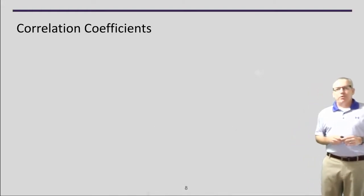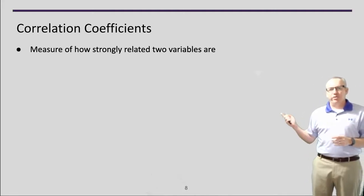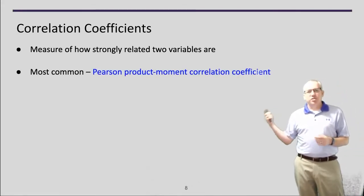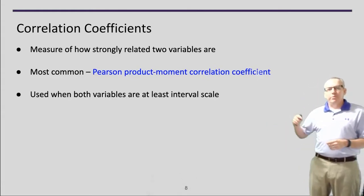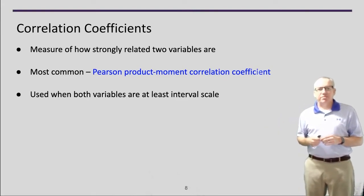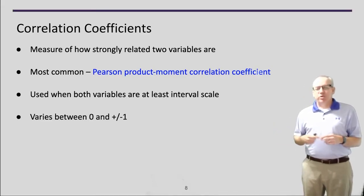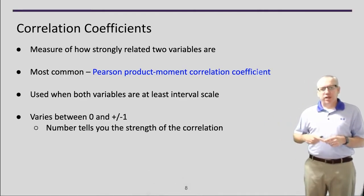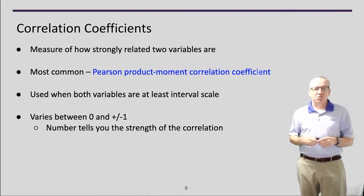Another concept to think about is correlation coefficients. If I have two variables that I'm plotting against each other, the correlation coefficient tells me how strongly related those two variables are. The most common one is the Pearson correlation. Data needs to be at least interval for both variables. This value varies between zero and plus or minus one — the closer to one, the stronger the correlation; the closer to zero, the weaker. The sign tells you the direction.